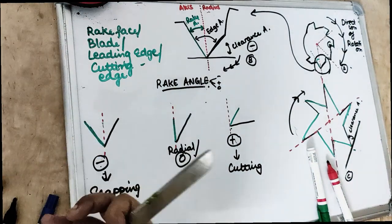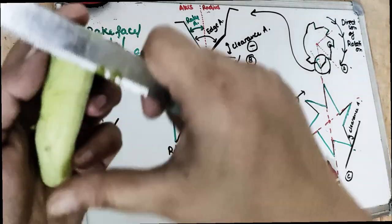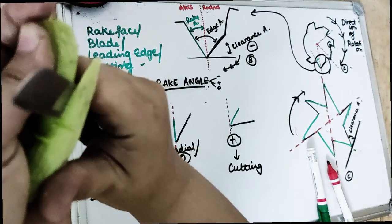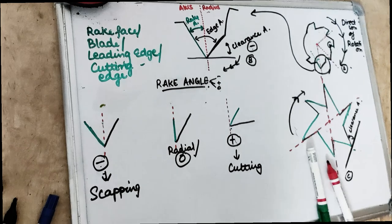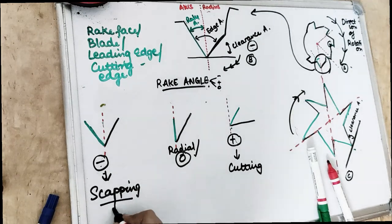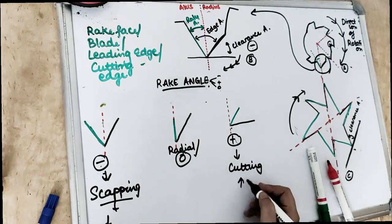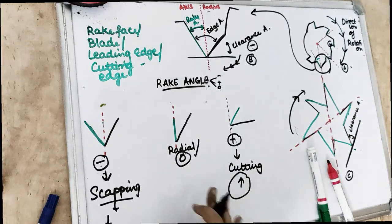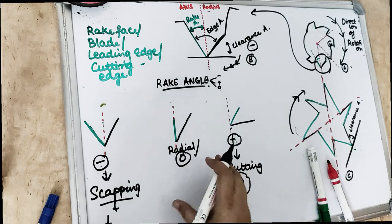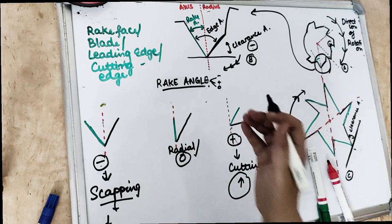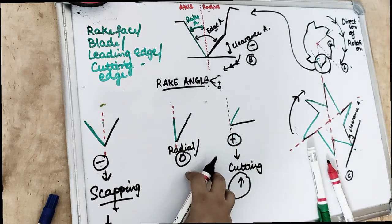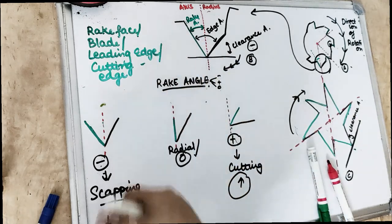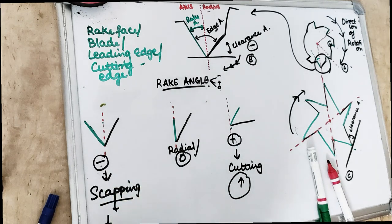For a negative rake angle, the scraping action requires more force. More heat is generated due to friction, and more energy or horsepower is required. A positive rake angle produces less heat because friction is also less. The cutting efficiency of a negative rake angle is less, while the cutting efficiency of a positive rake angle is more. There are three possibilities: positive, negative, or zero rake angle. I hope this has made the rake angle clear — the most difficult part to understand in endodontics.